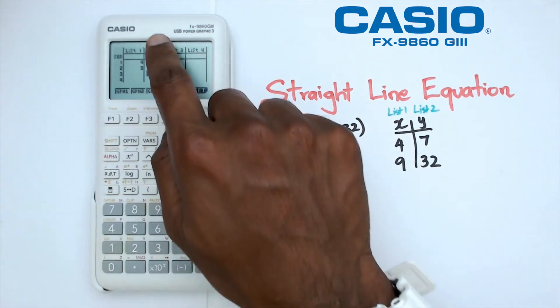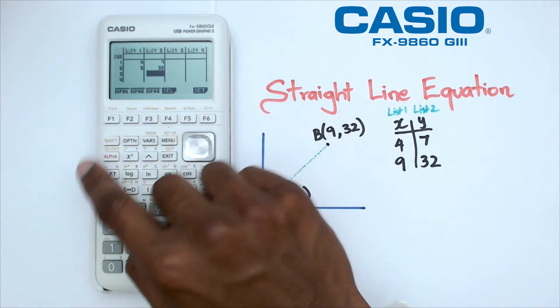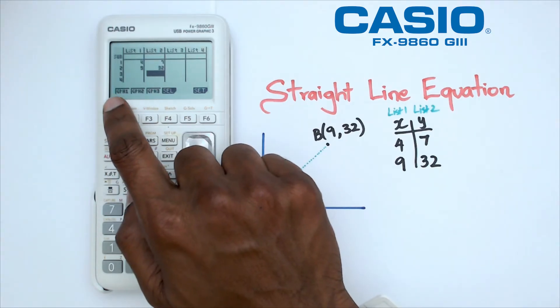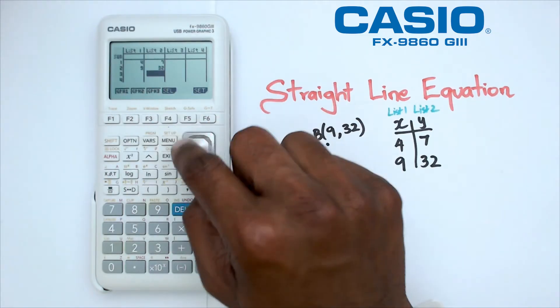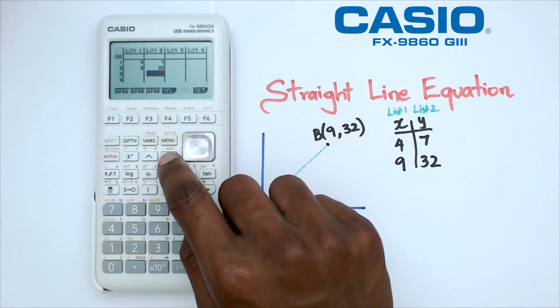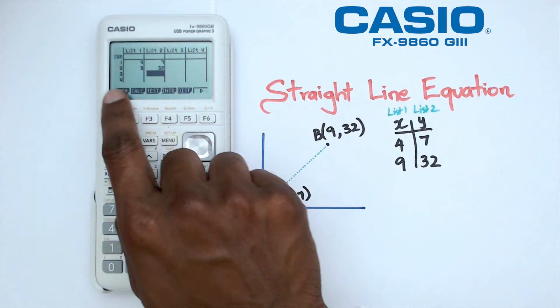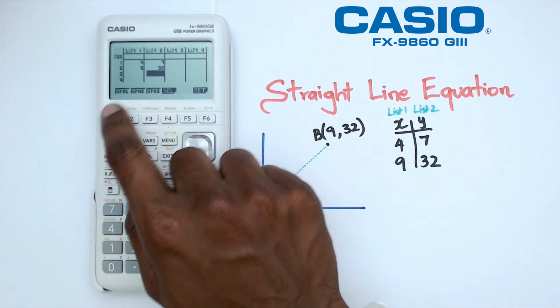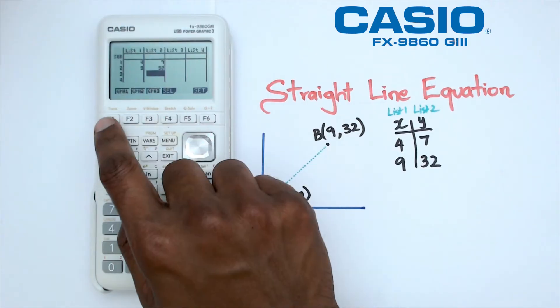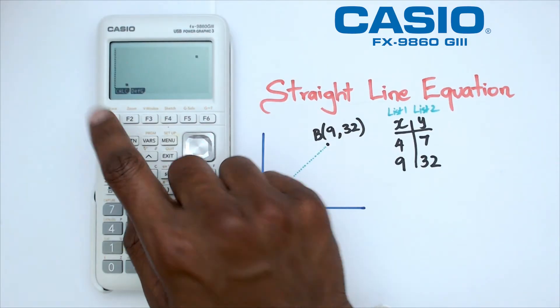Now we've put in our X values and our Y values. Our next step is to click on graph. Sometimes you might not see this menu. All you have to do is make sure you click on exit and press the graph which is F1. We're going to click on that and choose graph 1, which is also F1.